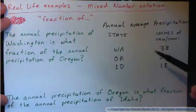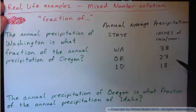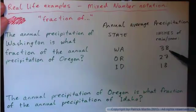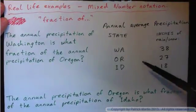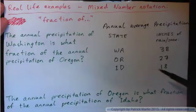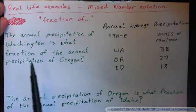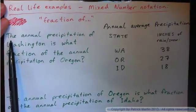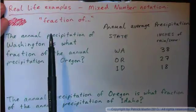Washington gets on average 38 inches of precipitation — rain and snow combined — per year. Oregon gets 27 inches and Idaho gets 18.